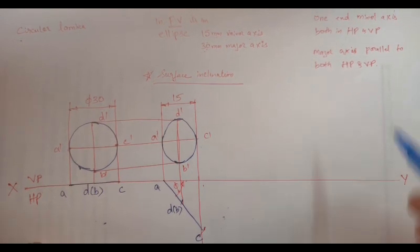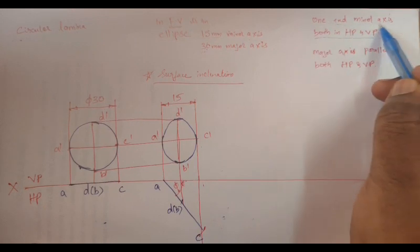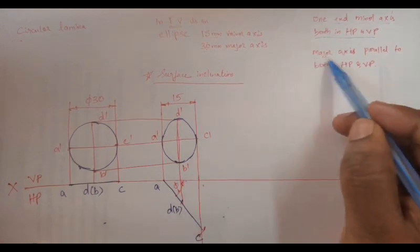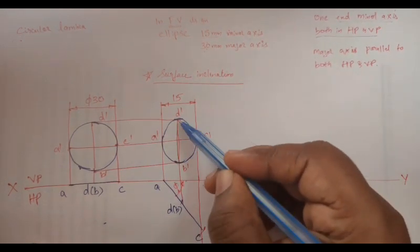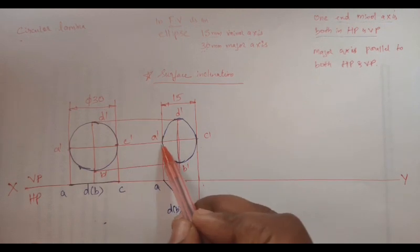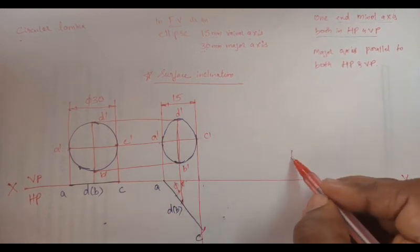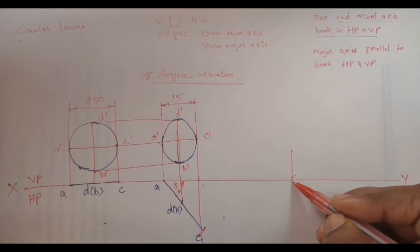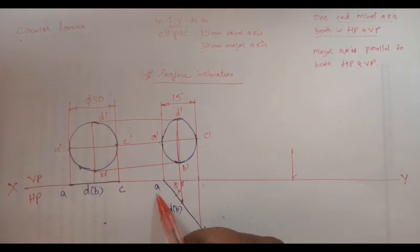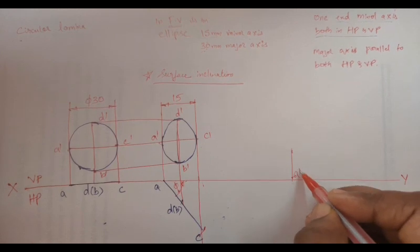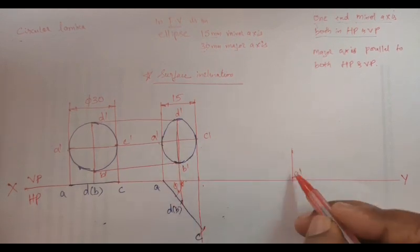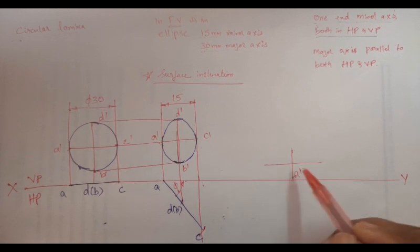One end of the minor axis is on both HP and VP. The minor axis length — A dash to C dash — is 15mm. The major axis, D dash to B dash, is 30mm and is parallel to both HP and VP. I need to take this distance as a horizontal line and make it vertical — that length is 15mm. A should be on both HP and VP because one end of the minor axis is on both HP and VP.